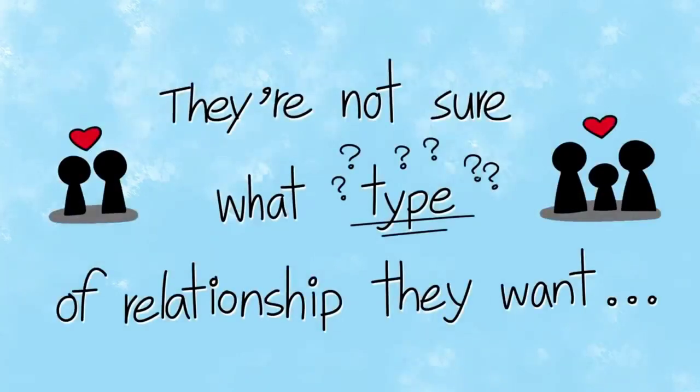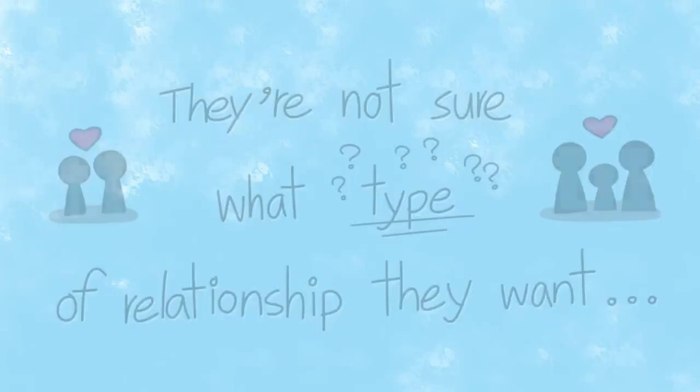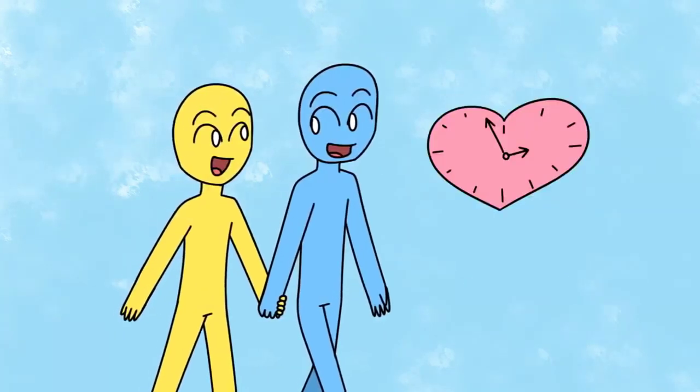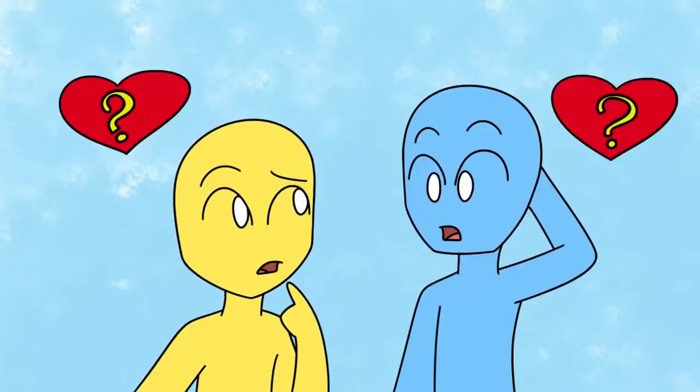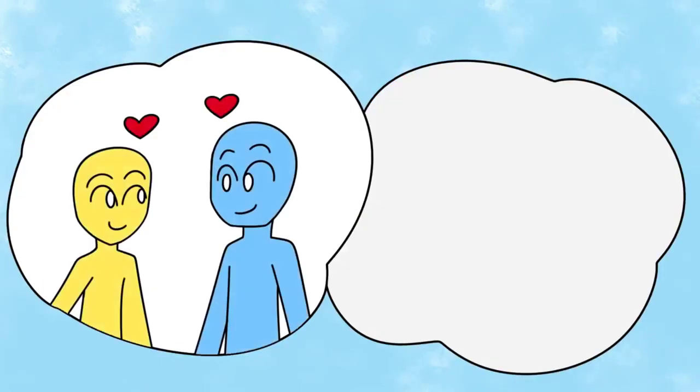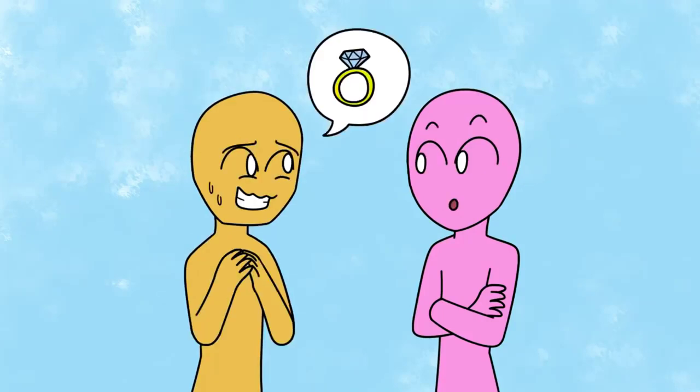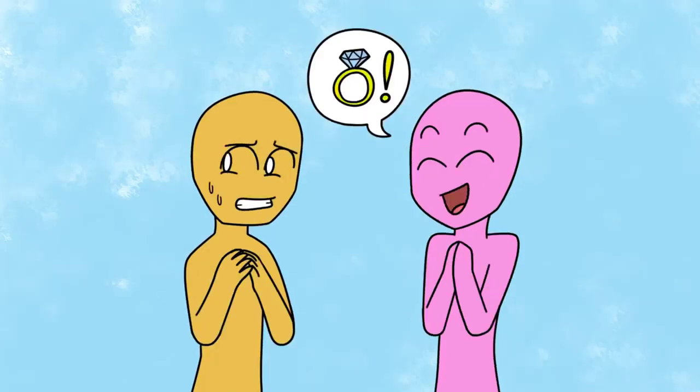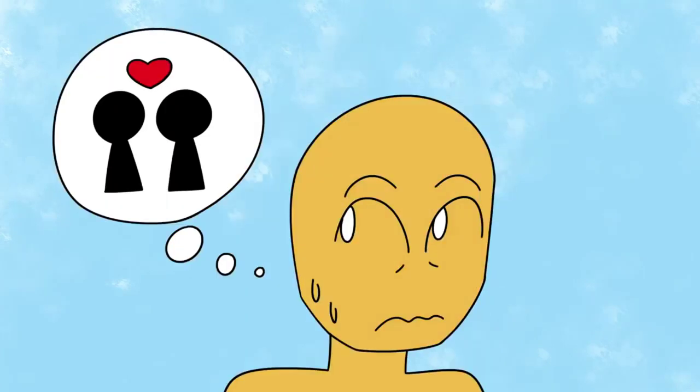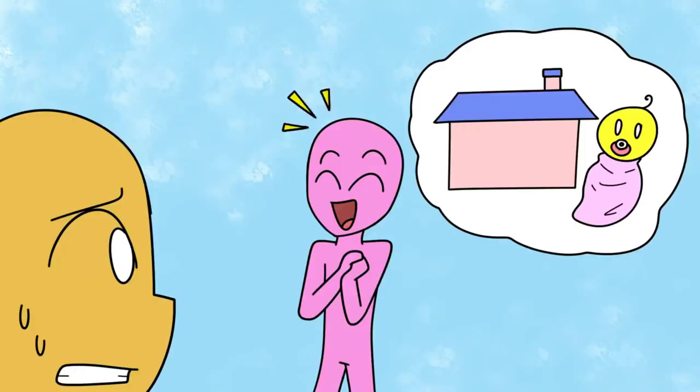Number three: They're not sure what type of relationship they want. At a certain point in a relationship, it's usually a good idea to figure out what each partner's goals are. Do you both want something casual or something serious? Maybe you two just want to be friends. But when you find someone who can never seem to decide what they want, it might be a sign they're leading you on. If someone is interested in a casual relationship, they should come out and say it ASAP. Letting the other person believe otherwise is manipulative and insensitive.